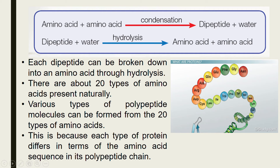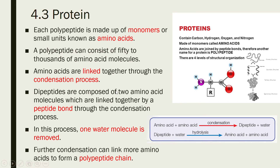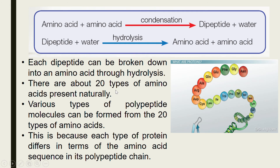Each type of protein differs in terms of amino acid sequence. If the amino acids are arranged in different positions, the sequence is different, and it will result in different types of proteins. Remember: what is condensation, what is hydrolysis, in terms of the protein structure.